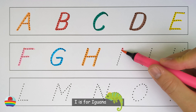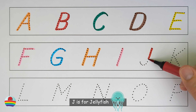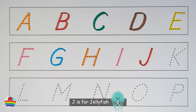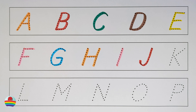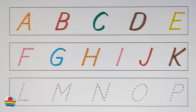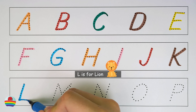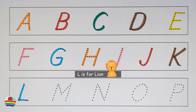I. I is for iguana. I. J. J is for jellyfish. J. K. K is for koala. K. L. L is for lion. L.